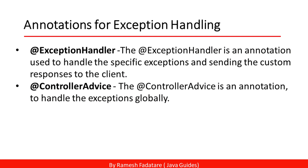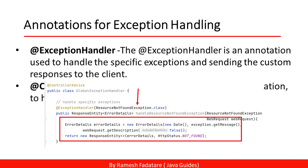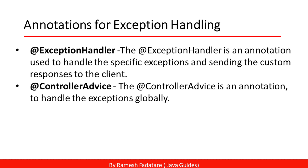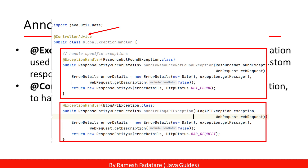These are the annotations we'll use when writing code to customize the REST API error response. The @ExceptionHandler annotation is used to handle specific exceptions and send a custom response to the client — for example, to handle a ResourceNotFoundException. The @ControllerAdvice annotation is used to handle exceptions globally: instead of handling exceptions in each controller, we create a global exception handler class annotated with @ControllerAdvice and handle specific and global exceptions in a single place.